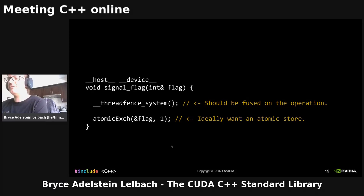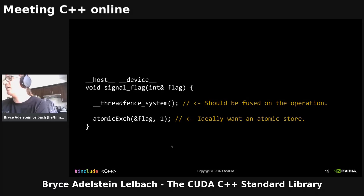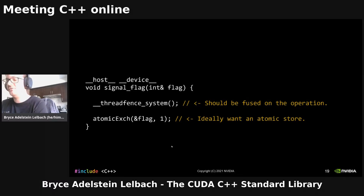There's a workaround using atomic exchange and ignoring the result, but that's a little kludgy. We still can't get rid of the fence because all CUDA legacy atomics have relaxed semantics — and again, this is very common across pre-C++11 atomic interfaces. Since we wanted store release semantics, we still need to keep the fence in here.